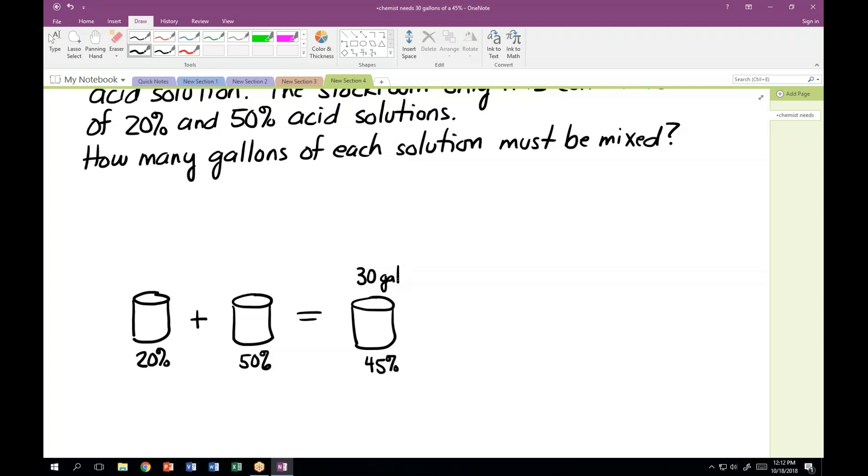Now how much of the other one has to be added? If I add x of the 20%, well, there's only 30 gallons total here to work with. So let's say I assume I was going to put 10 gallons of the 20% in, let's say that was the right number. Well, all that's left to put in for the 50% is 30 minus the 10, or 20 gallons.